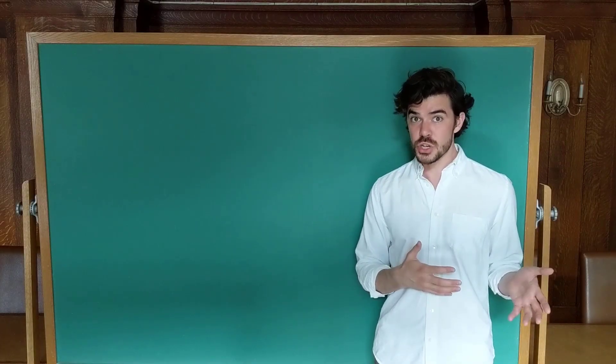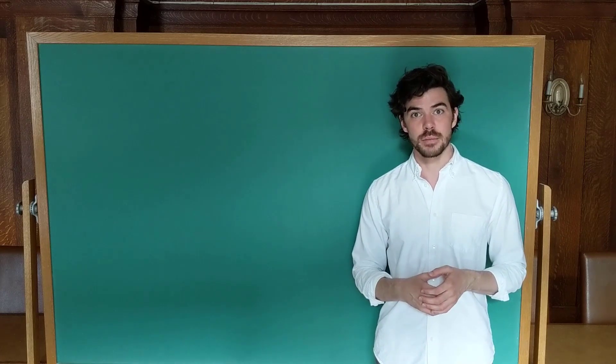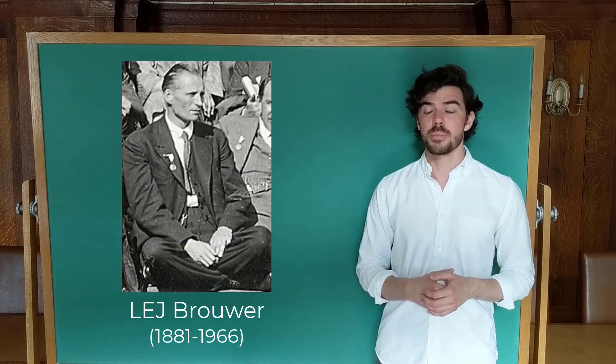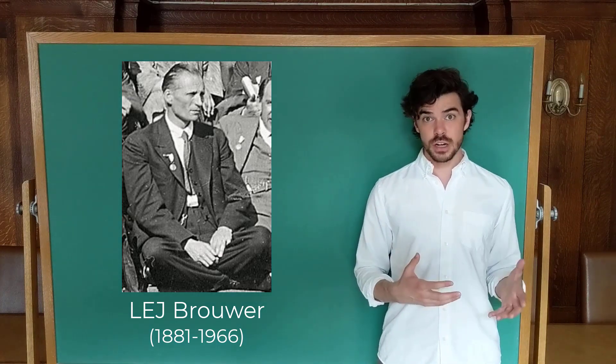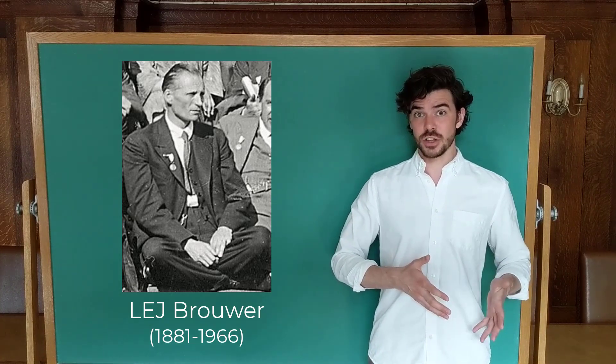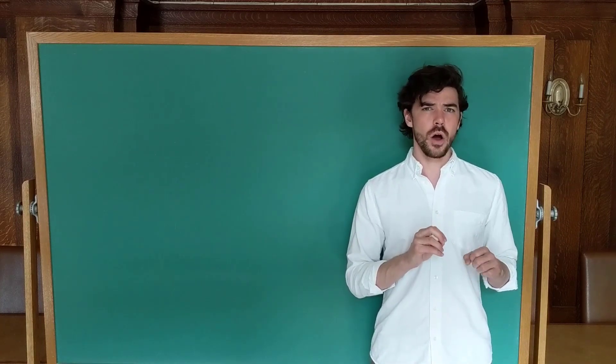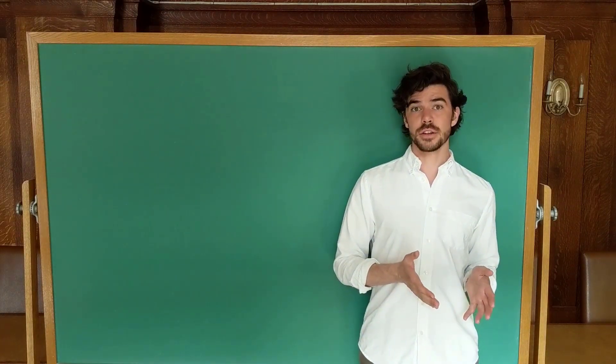This is so-called intuitionistic logic, which was developed in the 20th century by a Dutch mathematician named L.E.J. Brouwer. I plan to make an independent video about Brouwer and the philosophical underpinnings for his constructivism about math and what prompted him to create this intuitionistic logic. But for now I want to zero in on why intuitionism does away with excluded middle altogether.